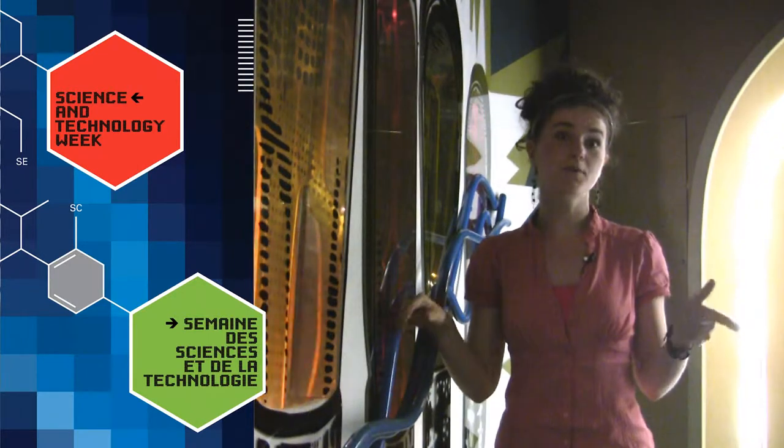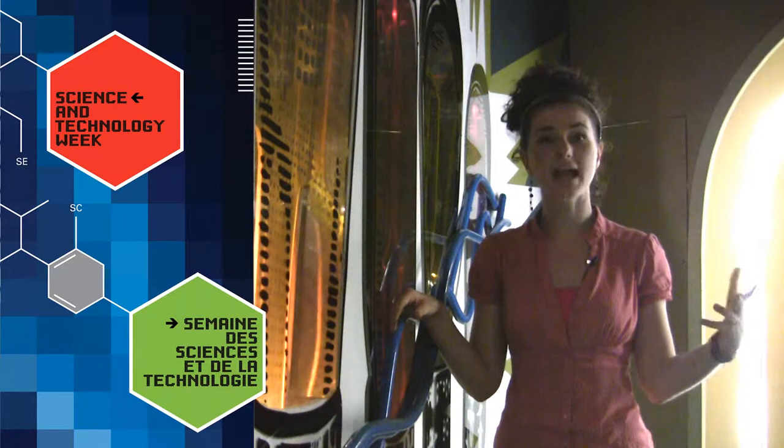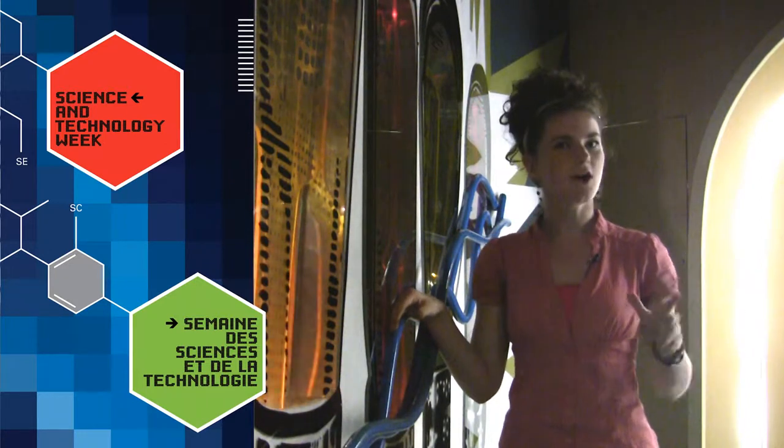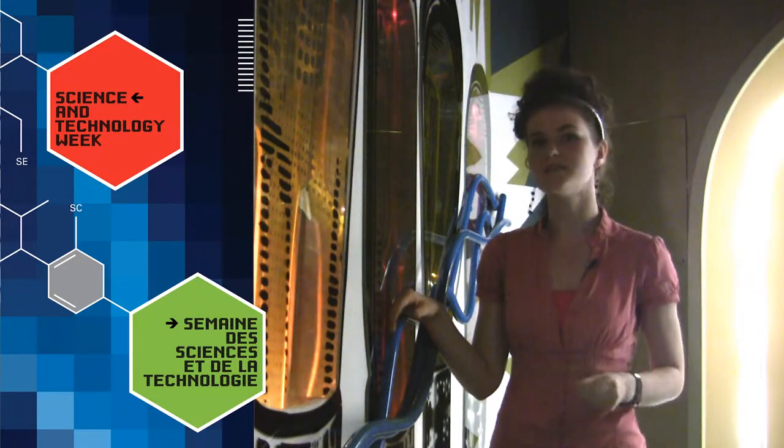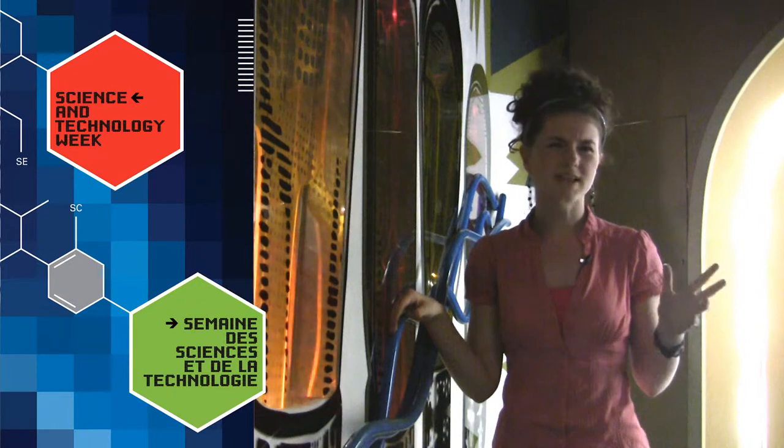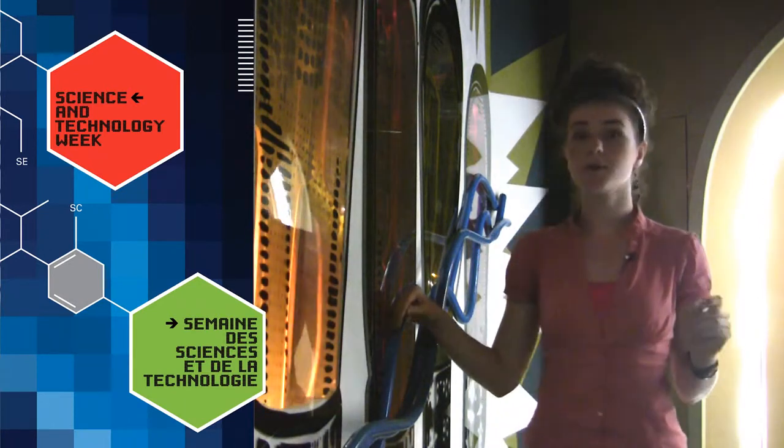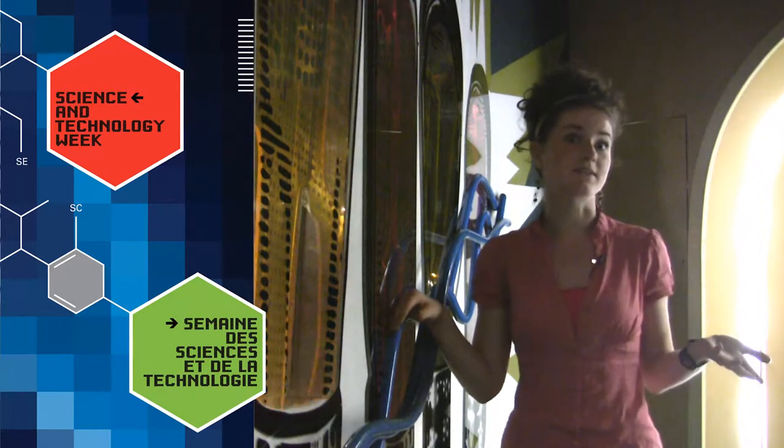These photons travel through space as oscillating electric and magnetic waves. The speed of the oscillation is what determines what color light you see. However, most light oscillates too quickly to be detected by human eyes, which is why we're not constantly blinded by radio signals.